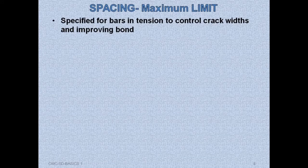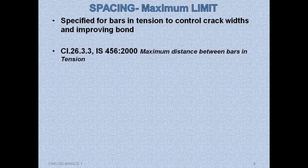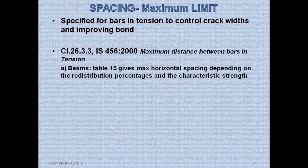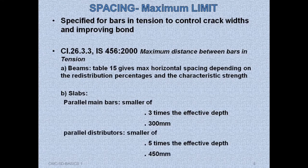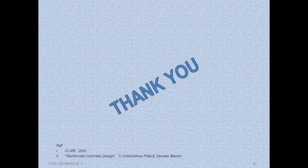Maximum limits are specified for bars in tension to control crack width and improve bond. Clause 26.3.3 of IS 456:2000 specifies the maximum distance between bars in tension. For beams, Table 15 gives the maximum horizontal spacing depending on redistribution percentages and characteristic strength. For slabs, the maximum spacing for parallel main bars is the smaller of three times the effective depth or 300 mm. For distributors, it is the smaller of five times the effective depth or 450 mm.